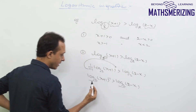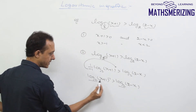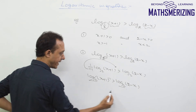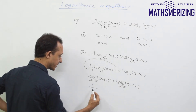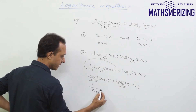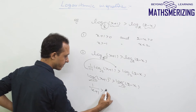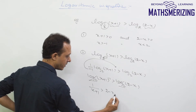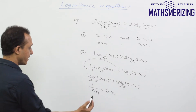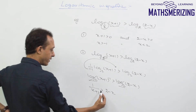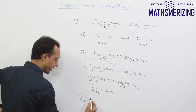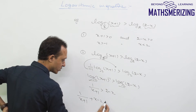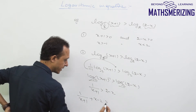Now both sides have base 2. Since the base is greater than 1, taking the anti-log does not change the inequality sign. So I'll write: 1 upon (x+1) is greater than 2-x. I'll take everything to the left-hand side, writing 1 upon (x+1) plus x minus 2 is greater than 0.